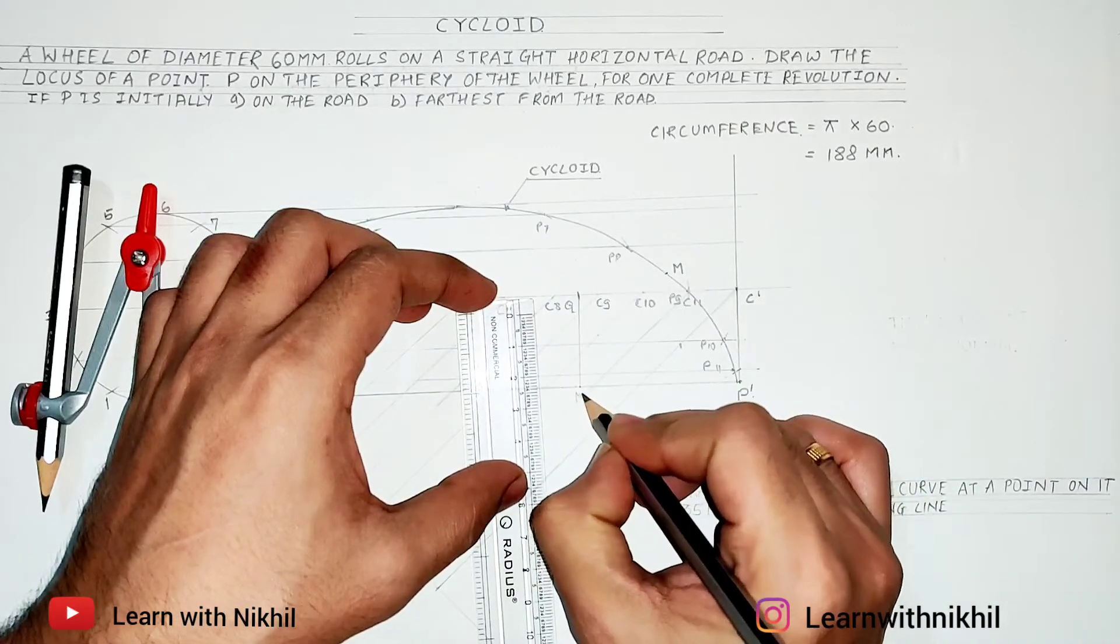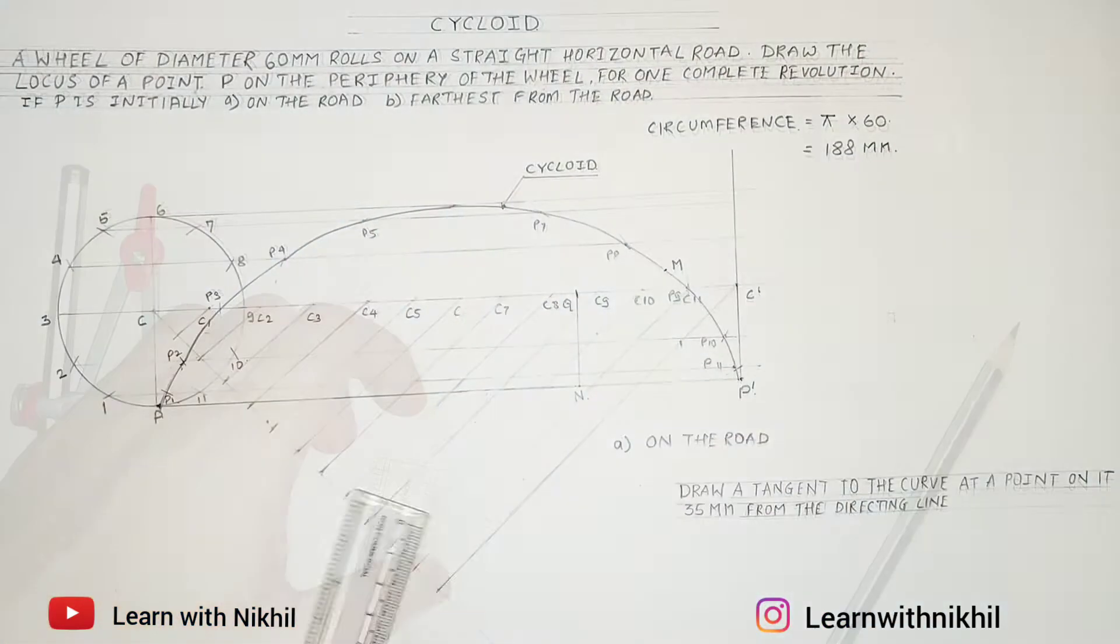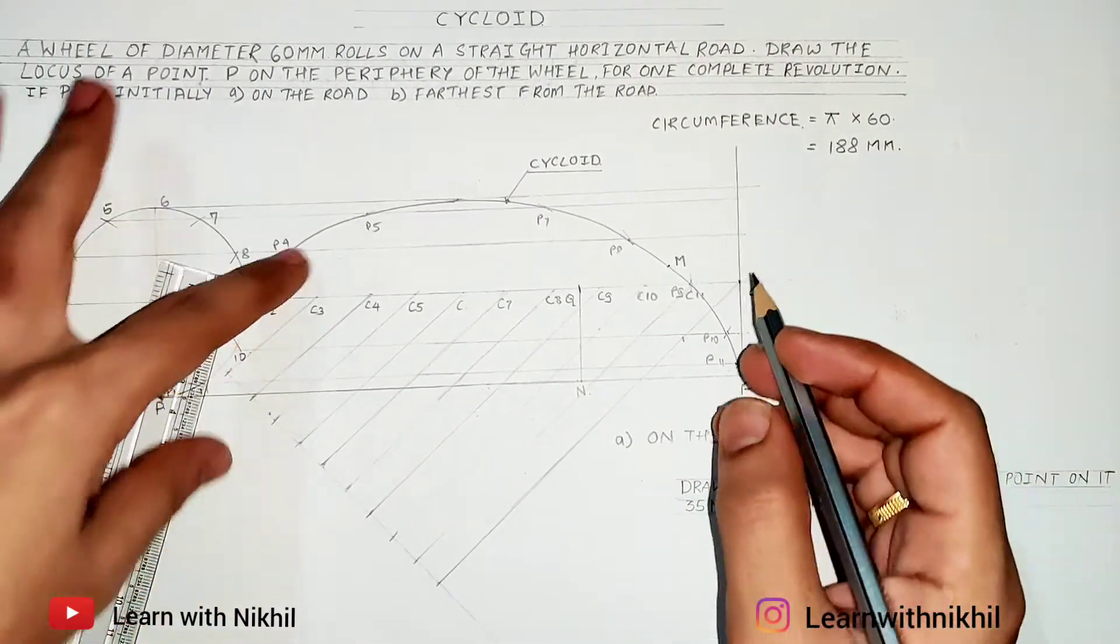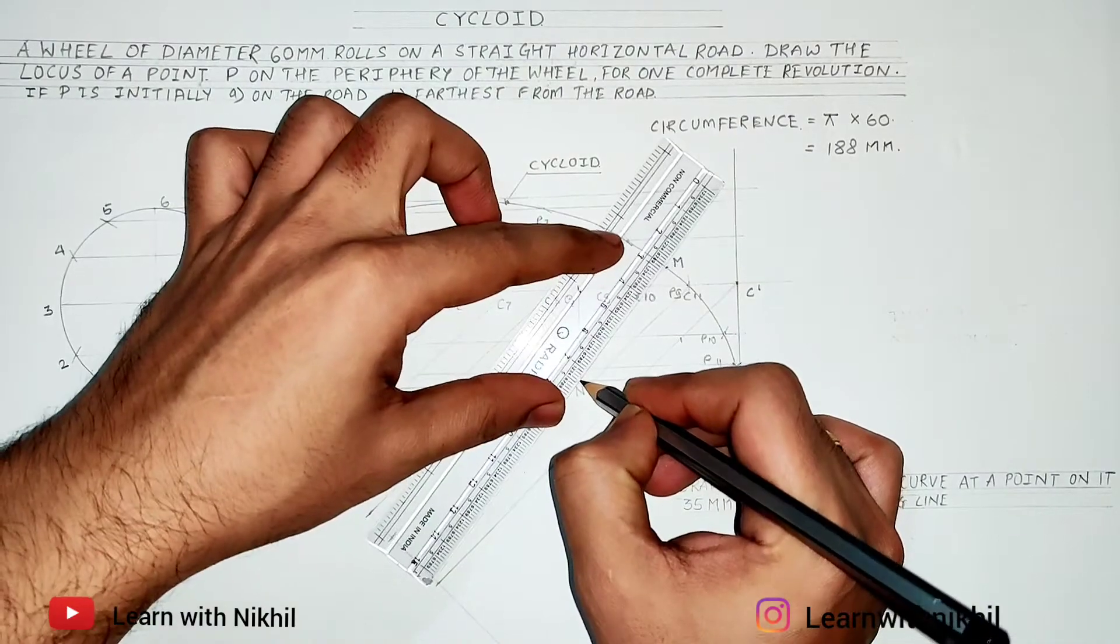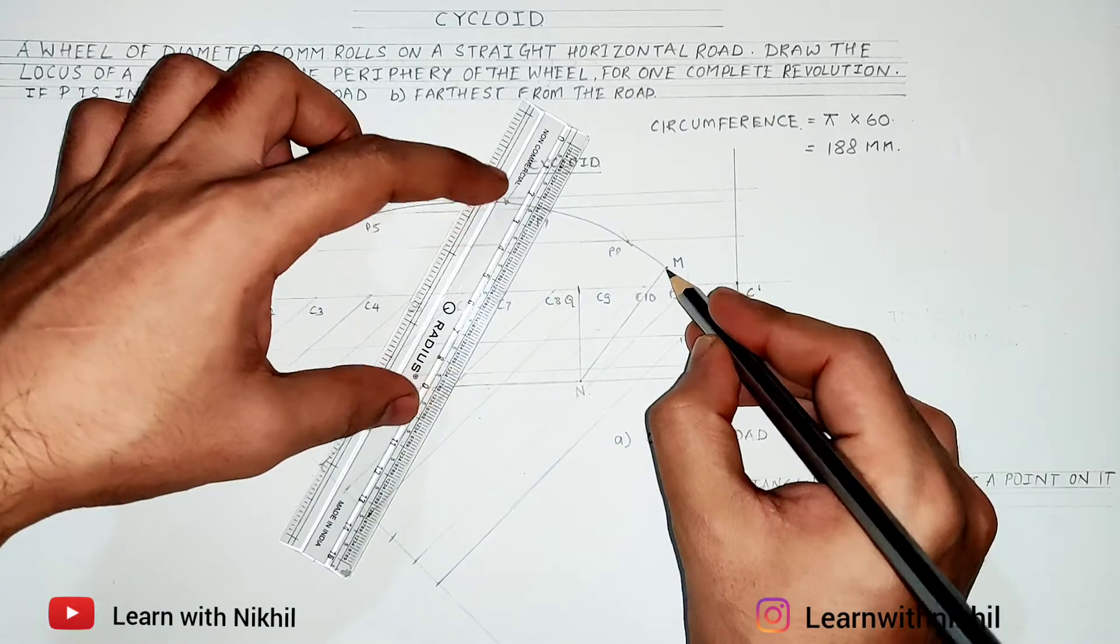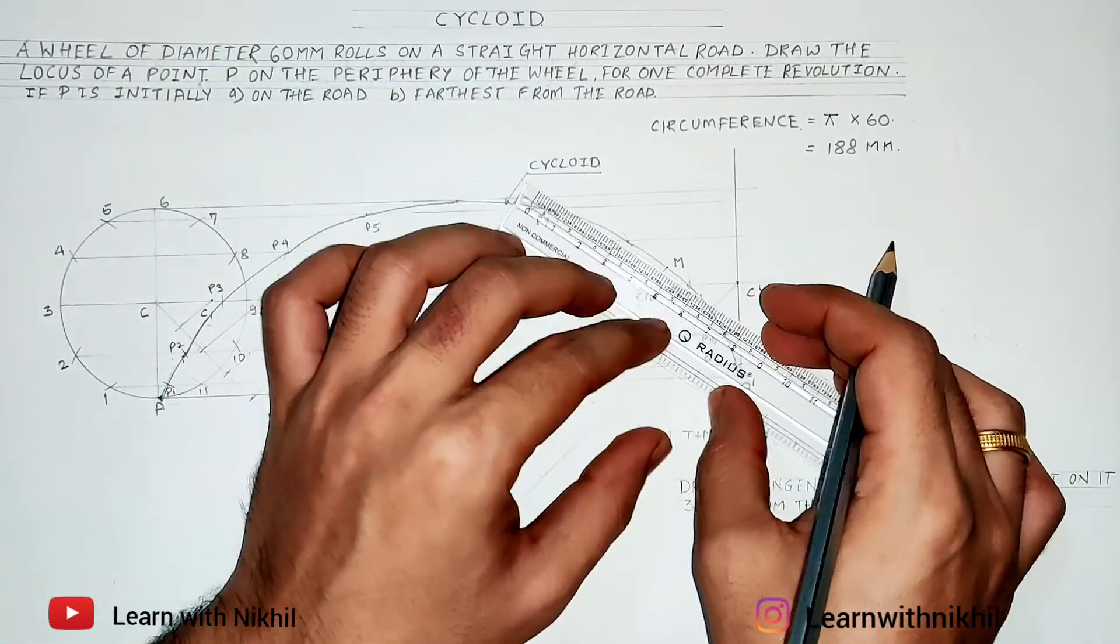C9 and mark that point as N, then join NM. So this line NM is normal. Now through this point